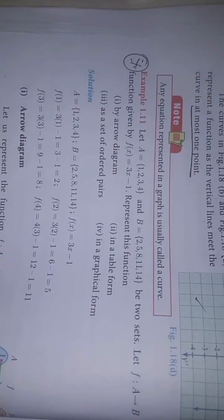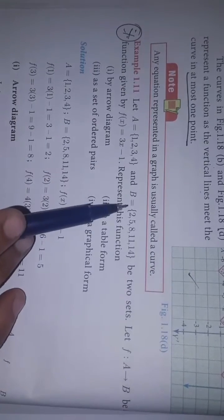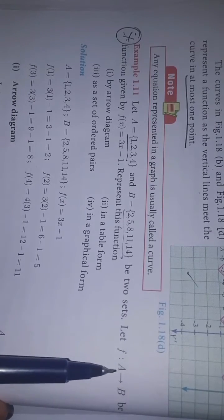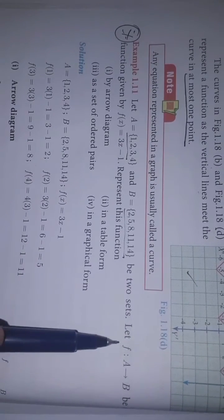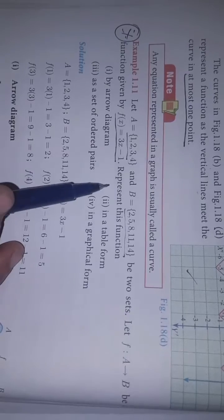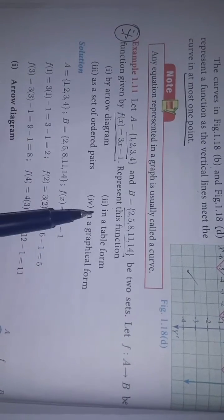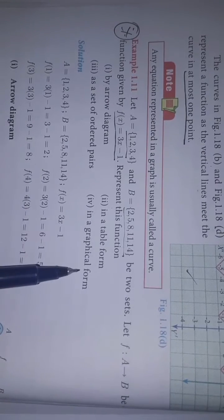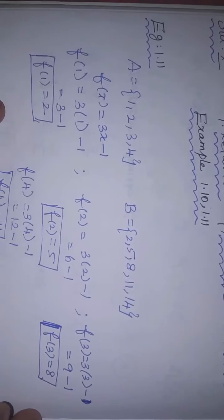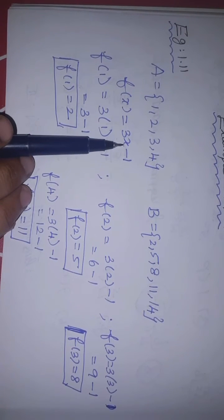Example 1.11. This is very important. Let A be the first set and B be the second set. Let f be a function from A to B, given by f(x) = 3x minus 1. We have to represent this function in various forms. A and B are two sets, and the function f is 3x minus 1 — the domain and co-domain.